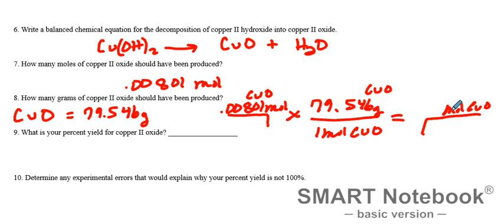It'll give us the grams rather, not the moles. So when we multiply those two out, it's 0.637 grams of copper II oxide.